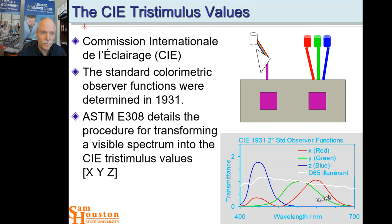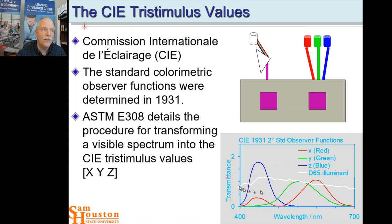This is the D65 illuminant — the map of bright daylight illumination. ASTM E308 details the procedure for transforming any visible spectrum into the tristimulus values. X, Y, and Z represent the amount of the X spectrum (red), the Y spectrum (green), or the Z spectrum (blue) that contributes to any spectrum collected in terms of transmittance.